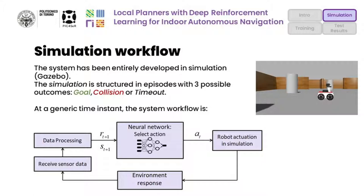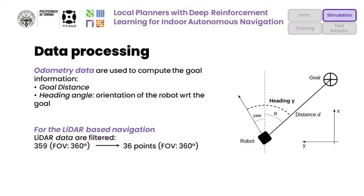The robot can reach the goal, collide with an obstacle, or otherwise the episode is terminated. At a generic time instant, an artificial neural network selects an action for the robot and it is activated in the simulated scenario. The environment processes the new collected sensor data and samples a reward and the new state for the agent. We use odometry data from simulation to compute the goal information: the goal distance and the heading angle, which is the orientation of the robot with respect to the goal.